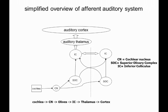Here's a simplified overview of the afferent auditory pathway — the kind of thing that used to be an exam question: draw a simplified diagram of the afferent auditory pathway. You would start at the cochlea, go to the cochlear nucleus, superior olivary complexes, inferior colliculus, auditory thalamus (medial geniculate body), and cortex. There's a midline here — this is the ipsilateral side and this is the contralateral side. We'll now go through all these different stations and discuss what we know about each, starting with the auditory nerve, which we covered last week.